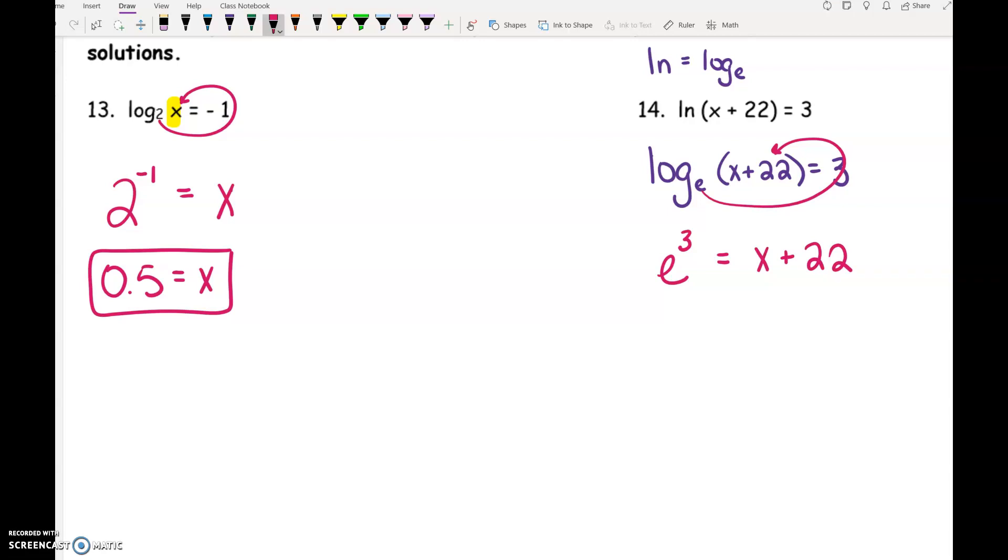E is above your LN button. So we would do second LN button to get E on our calculator, and then the 3. The E on your calculator is right above your LN button. So second LN button, and then type in the 3.